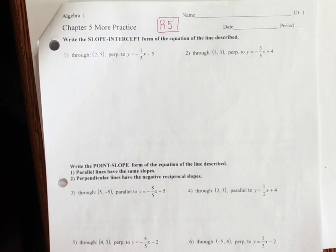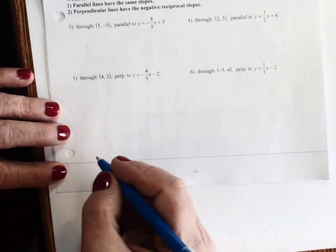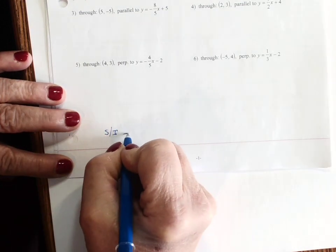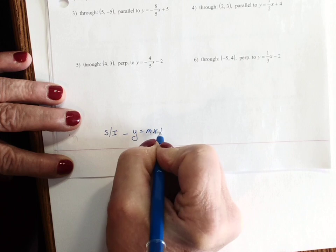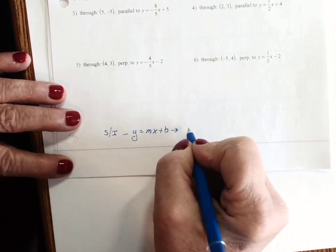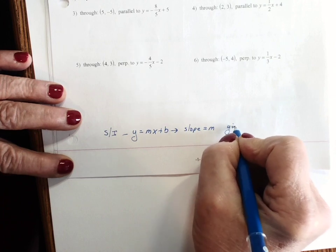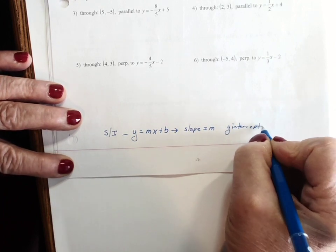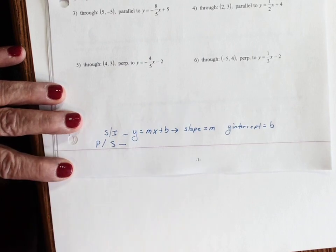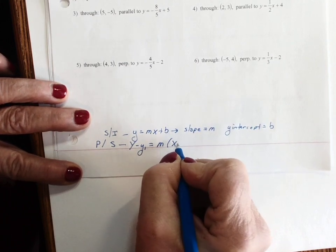Before we start, I would like to make sure that you know the key concepts for this chapter. You need to know slope intercept which is y equals mx plus b. The slope is equal to m and the y intercept is equal to b. So you have to memorize this.